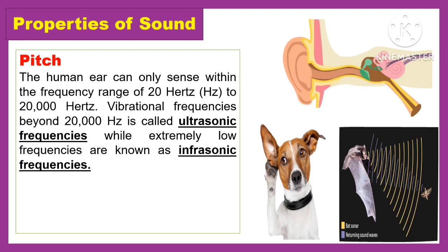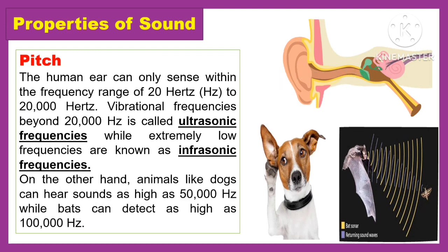The human ear can only sense within the frequency range of 20 hertz to 20,000 hertz. Vibrational frequencies beyond 20,000 hertz are called ultrasonic frequencies, while extremely low frequencies are known as infrasonic frequencies. Animals like dogs can hear sounds as much as 50,000 hertz, while bats can detect as high as 100,000 hertz.